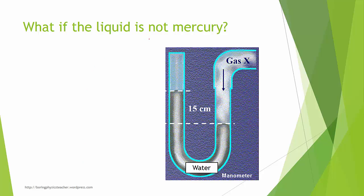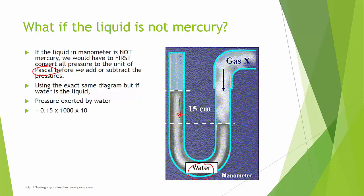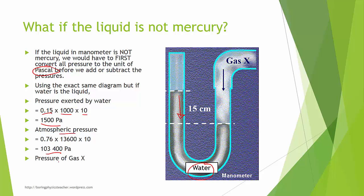What if the liquid is not mercury? You must first convert all pressure units to Pascal before adding or subtracting. If we use the same diagram but with water instead, the pressure exerted by the water column is 0.15 multiplied by the density of water multiplied by g. Atmospheric pressure is also converted to Pascal, and the pressure of gas X equals the sum of those two values. You cannot simply add 15 cm directly — you must convert to Pascal first.